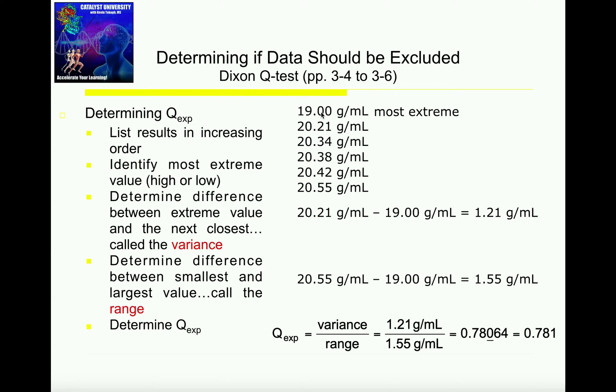What we can ask ourselves is, can we throw out this data point? We can't just throw it out by looking at it and saying it's a bad data point. We have to prove it's a bad data point. We have to prove that it's an outlier. And the way that we prove that is through something called a Dixon Q-test.